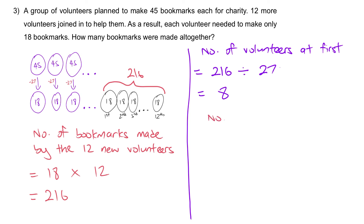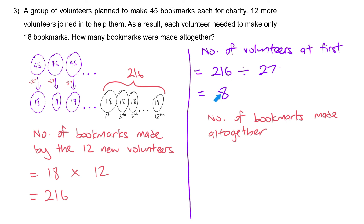Next, to find the answer: number of bookmarks made all together. There are two ways to do it since the total number stays the same. We can take 8 people times 45, or take the new number of people — 8 plus 12, which is 20 people — times 18, and you will still get the same answer. Using 8 times 45, you get 360 bookmarks made all together.